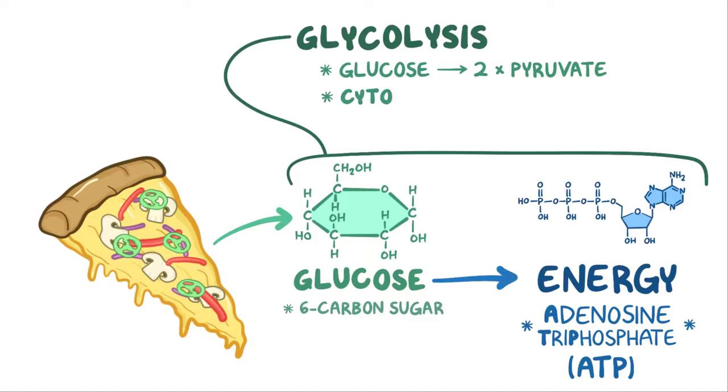Now glycolysis happens in the cytoplasm of cells, and no special organelles or even oxygen are needed to turn glucose into ATP. Therefore all cells can use glucose to make energy, and it's possible to do glycolysis even when oxygen levels are low.